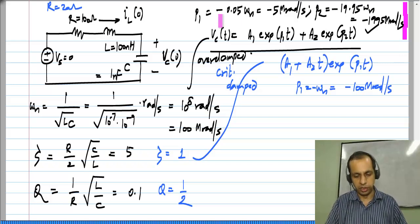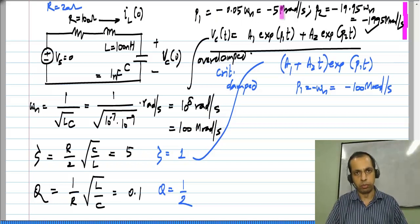Clearly in this case, the response will be dominated by P_1, because that is the smaller one and the exponential corresponding to that dies out more slowly in general.